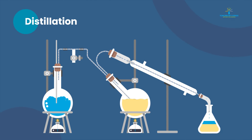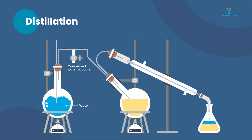The third is distillation — the most efficient and broadly used method when the desired compound is liquid. This is the schematic assembly of distillation, where we have a reaction flask attached to a condenser, and then the pure compound, depending upon its boiling point, is collected through distillation.